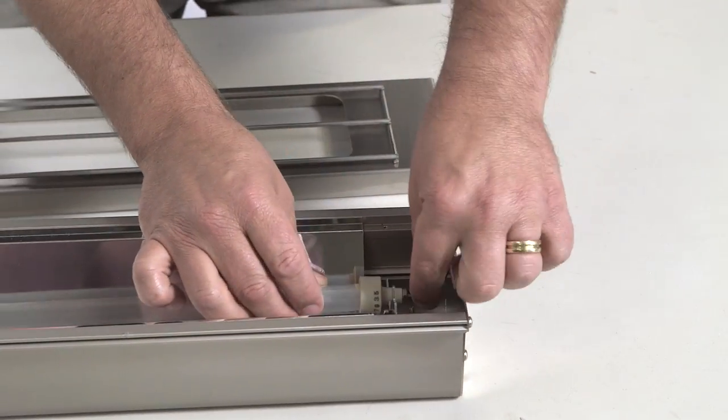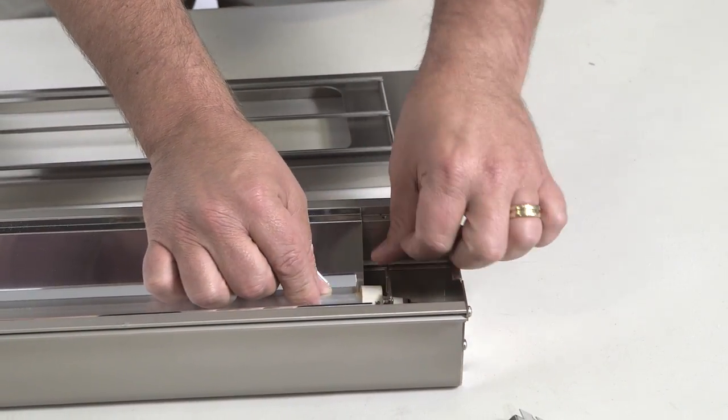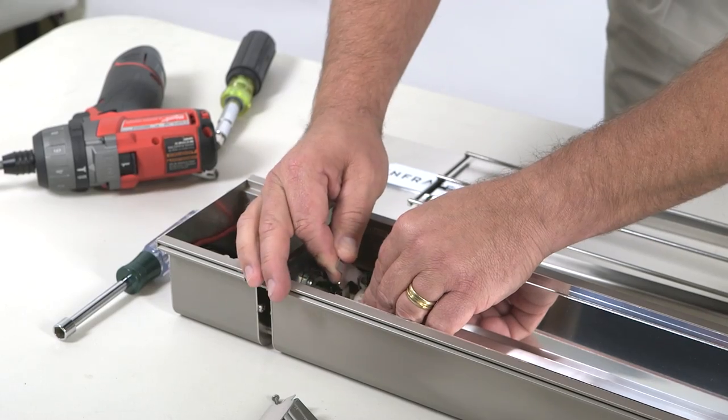Now you're ready to reseat the heating element in the groove and lower the retaining brackets. Repeat this on the opposite side.